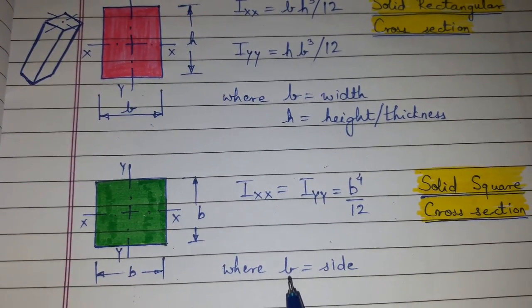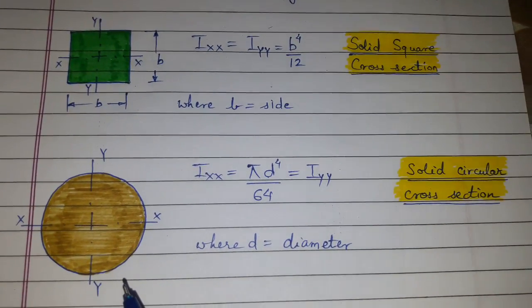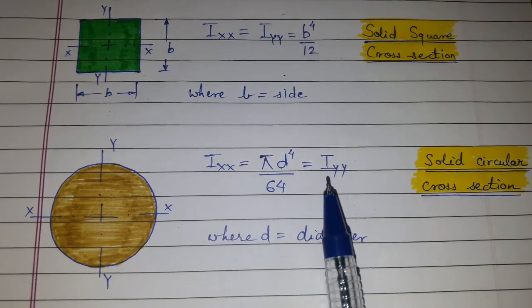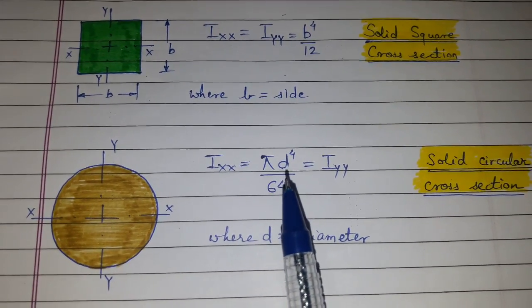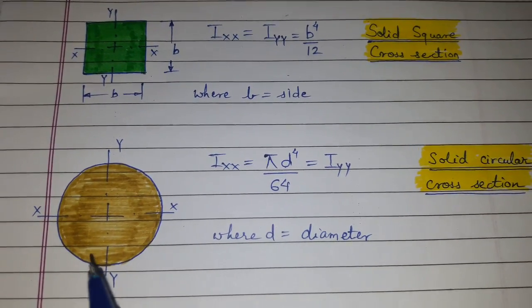For solid circular cross-section, Ixx is equal to Iyy is equal to π d raised to 4 divided by 64, where d is the diameter.